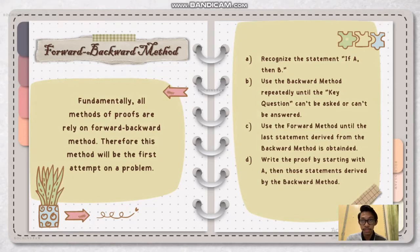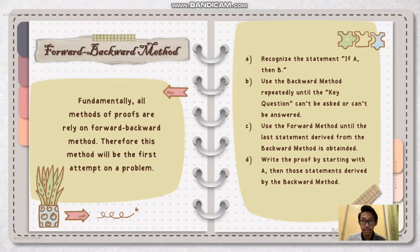On the next page, we have the general outline for the forward-backward method. Firstly, we need to recognize the statement: if A then B. After that, we repeat the backward method until the key question cannot be asked or answered. Next, we use the forward method until we have obtained the last statement acquired from the backward method. Then we write the proof by starting with A, then do statements derived by the backward method.